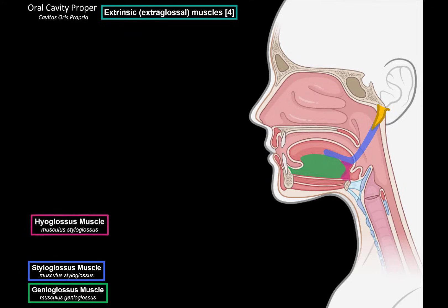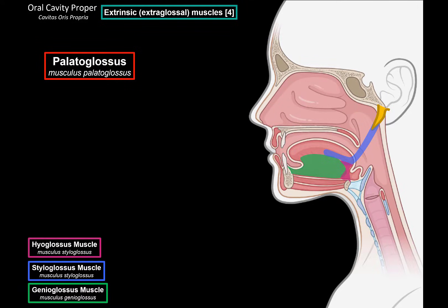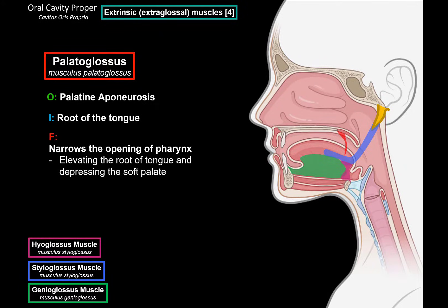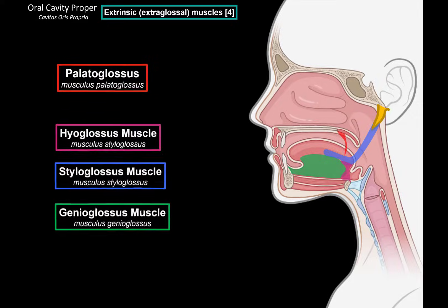The fourth extrinsic muscle depends on the source — some sources count only three extrinsic muscles, not including the palatoglossus, while others do include it. We'll add it to our list because it also aids in tongue movement. This muscle originates from the palatine aponeurosis of the soft palate, goes down, and inserts at the root of the tongue. Its function is to narrow the opening of the oropharynx by elevating the root of the tongue and depressing the soft palate. These are the four extrinsic muscles of the tongue.